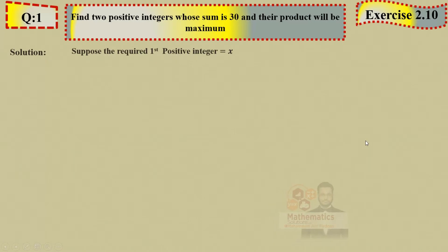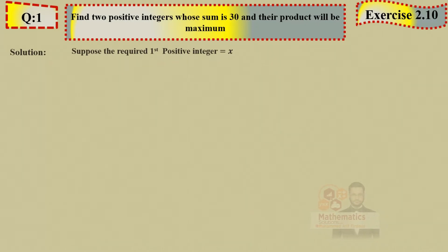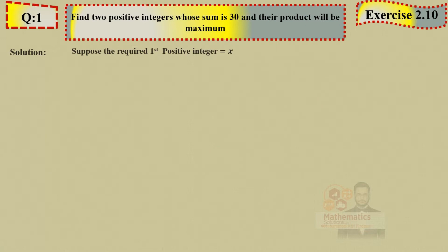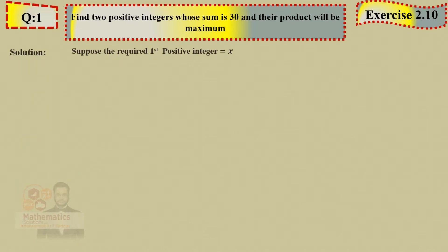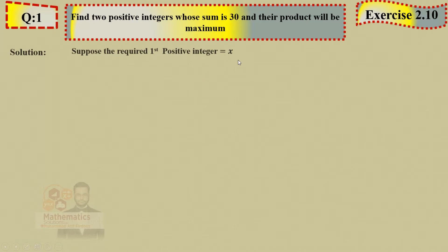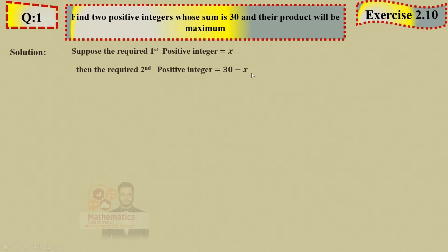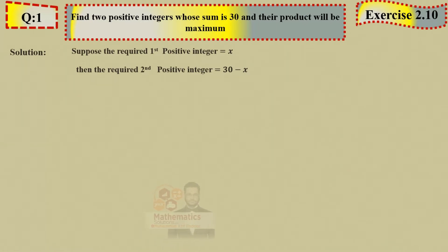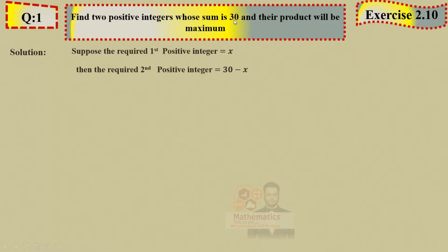Think of it this way: if you have 30 dollars to divide between two persons, and you give one person 10 dollars, the other gets 20 (30 minus 10). Same here — we don't know the integer, we've called it x. So the second positive integer will be 30 minus x. Then the second positive integer = 30 − x. So far: the first two steps are complete. Now to the given condition: their product will be maximum.